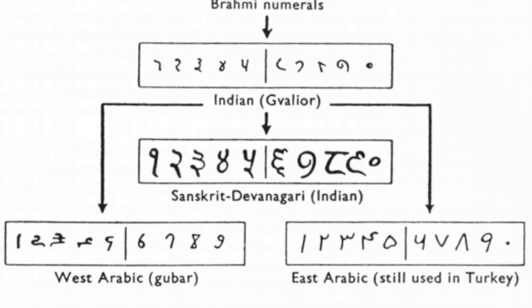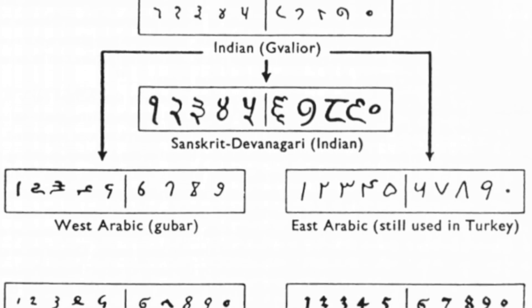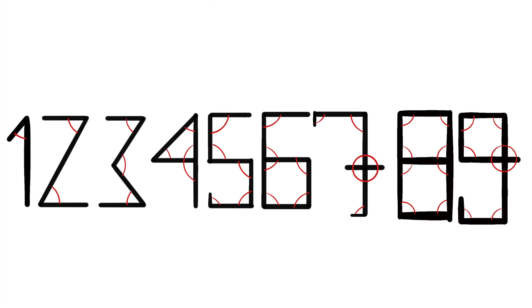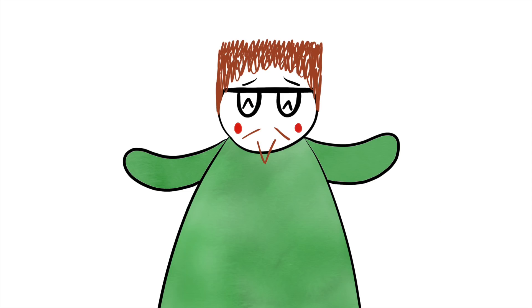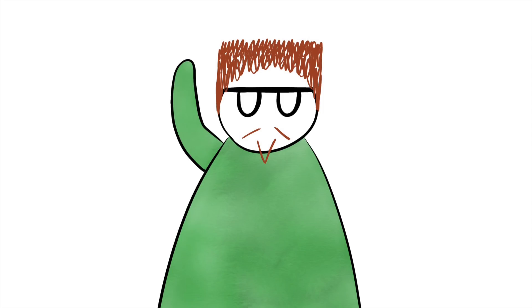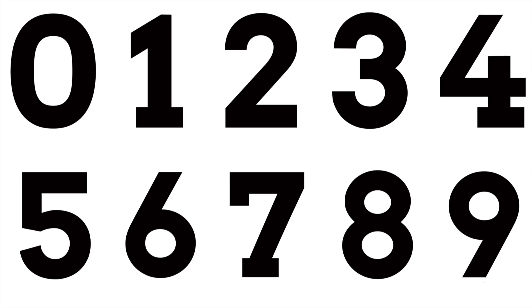The shapes of these numbers came to be simply through the evolution of other number writing systems. A popular theory is that the numbers are drawn the way they are because each one has the same number of angles as the number it represents. Though this theory seems to be debunked, it's still pretty neat. Anyway, let's get into the names of these numbers — and for now we'll be focusing on their English names, as this video would be way too long if it covered every number in every language.